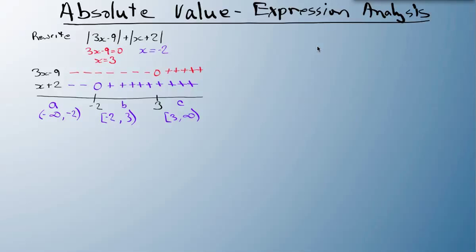For section A, from negative infinity to minus 2, I look at 3x minus 9. That's negative, so I flip it with a negative sign in front. There's a plus from the original equation. x plus 2 is also negative, so I have negative of x plus 2.